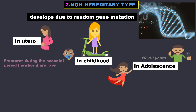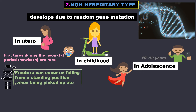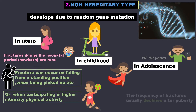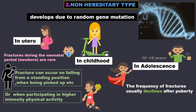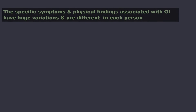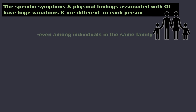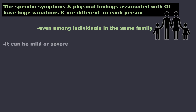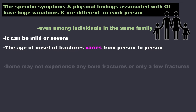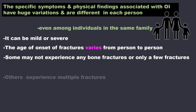Fractures during the neonatal period are rare. In childhood, fractures can occur on falling from a standing position, when being picked up, or when participating in high-intensity physical activity. In adolescence, the frequency of fractures usually declines after puberty. The specific symptoms and physical findings associated with OI vary greatly — even among individuals in the same family — and can be mild or severe. The age of onset of fractures varies from person to person; some may experience very few, others may experience multiple fractures.